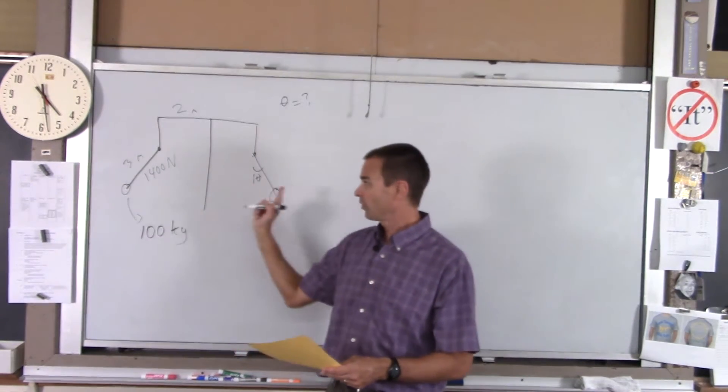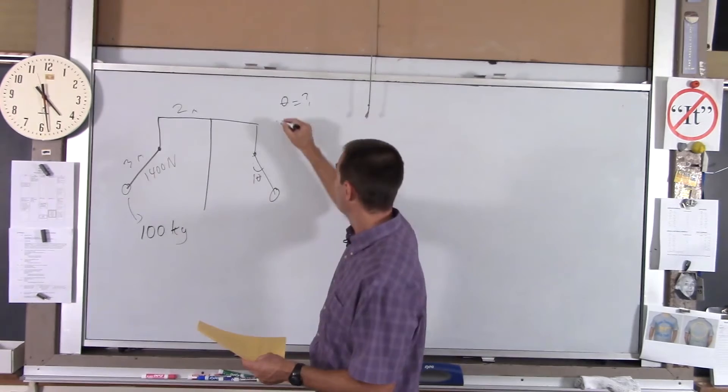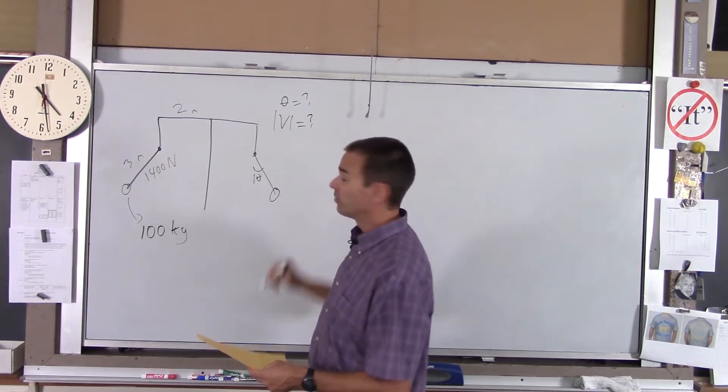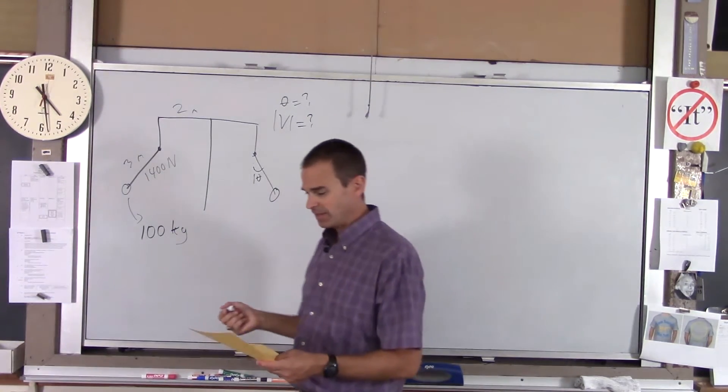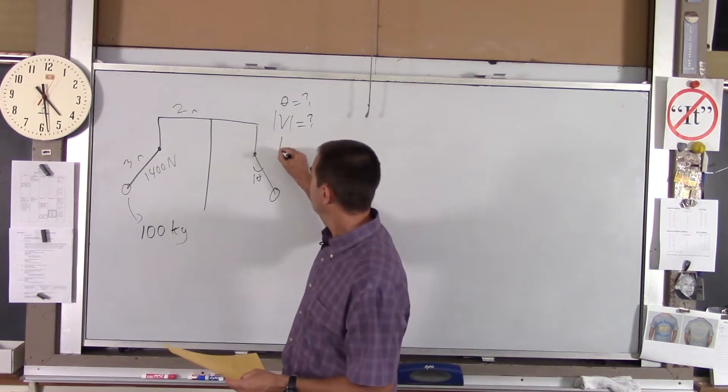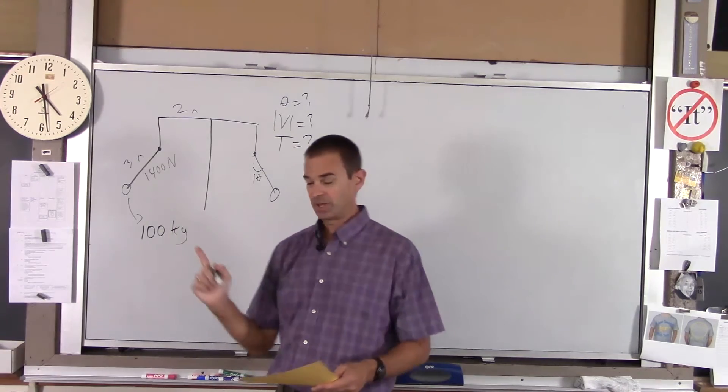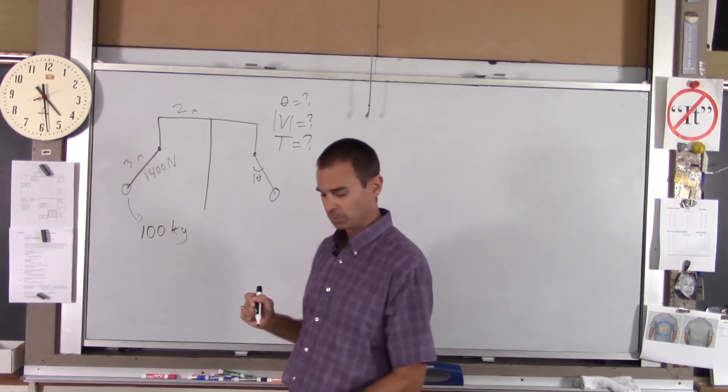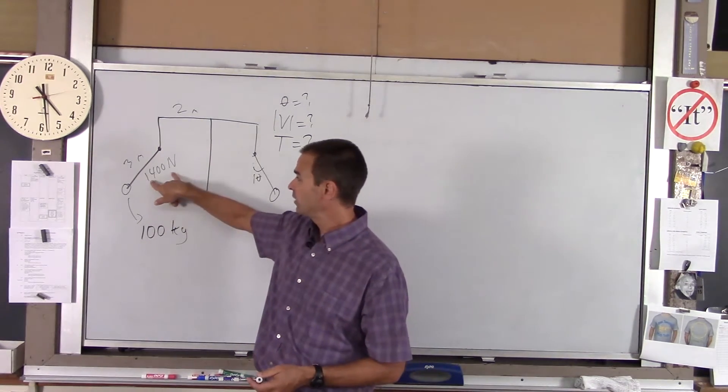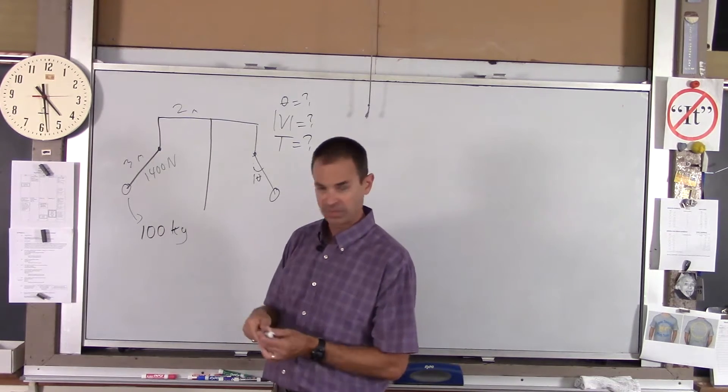How fast are the passengers going? What is the magnitude of their velocity? And finally, how long does it take for them to get around once? When they're going this max velocity. So we're looking at the maximum. When that tension reaches 1400 newtons.